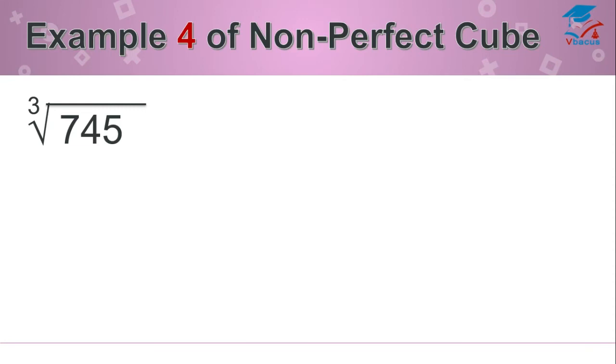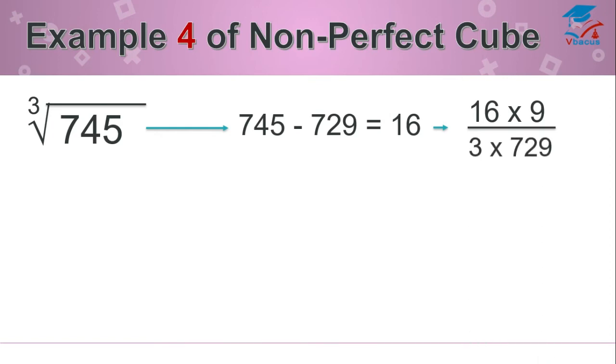Let us take another example. Find the cube root of 745. Since 745 falls in between 512 and 729, we will pick up 729. Find the difference between 745 and 729, that is 16. Multiply 16 by 9, that is perfect cube root of 729. It should be divided by 3 times 729, that is perfect cube of 9.